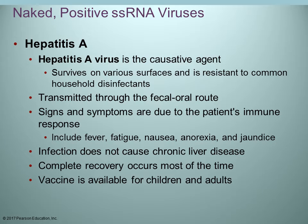Still talking about positive single-stranded RNA viruses without envelopes: Hepatitis A. The hepatitis A virus is the causative agent. It can survive on many surfaces and is resistant to common household disinfectants. It's transmitted through the fecal-oral route. Signs and symptoms include fatigue, fever, nausea, anorexia, and jaundice. This infection does not cause chronic liver disease like hepatitis B. Usually recovery is complete, and there is a vaccine available.